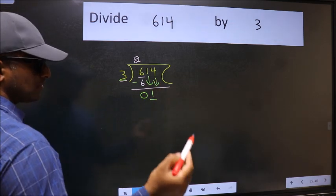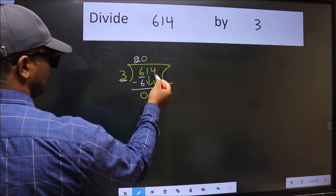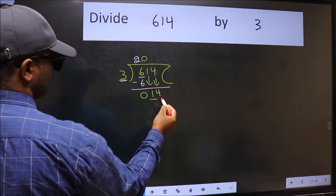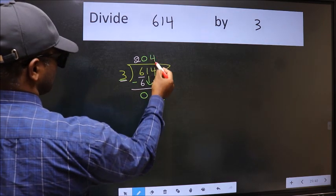And the rule to bring down the second number is we should put 0 here. Then only we can bring this number down. Now, 14. A number close to 14 in the 3 table is 3 4's, 12.